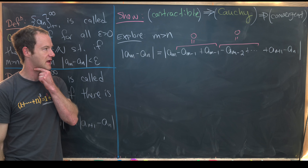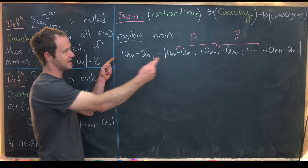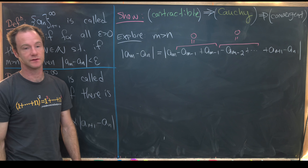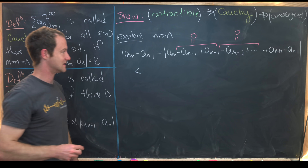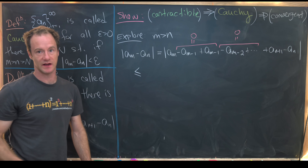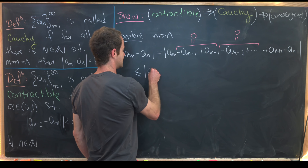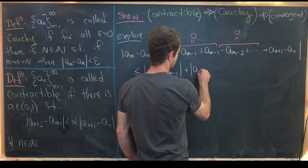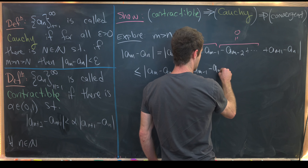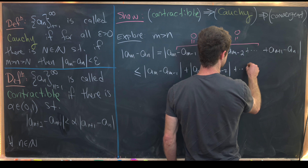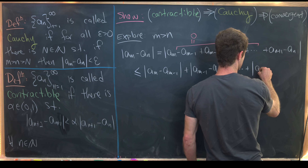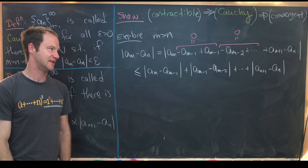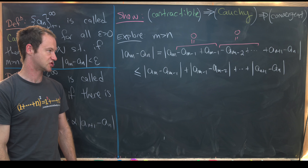Now we apply the triangle inequality, which allows us to take this large absolute value and break it into a sum of absolute values: |a_m - a_{m-1}| + |a_{m-1} - a_{m-2}| + … + |a_{n+1} - a_n|. That's just a standard application of the triangle inequality.